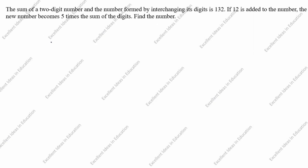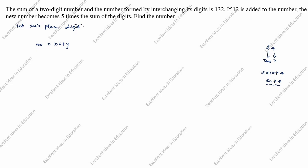We will take the two-digit number as 10x plus y. For example, take 24 — this is the ones place and this is the tens place. We write it as 2 times 10 plus 4, which is 20 plus 4. So the two-digit number is 10x plus y, where y is the ones place digit and x is the tens place digit.